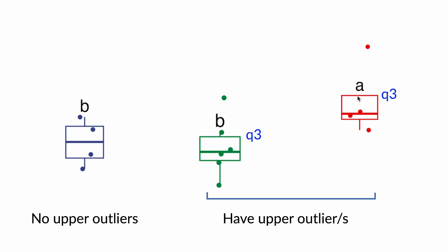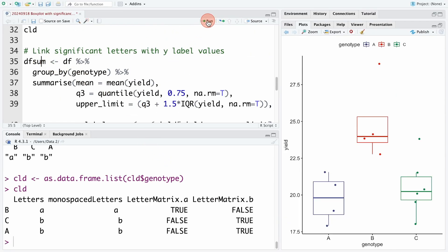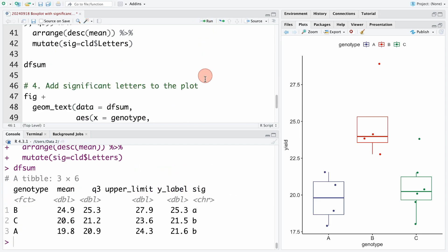Therefore, this code perfectly meets all of these cases. We run it, and we have the compact letters assigned to the Y label values. The table is named dfsum.